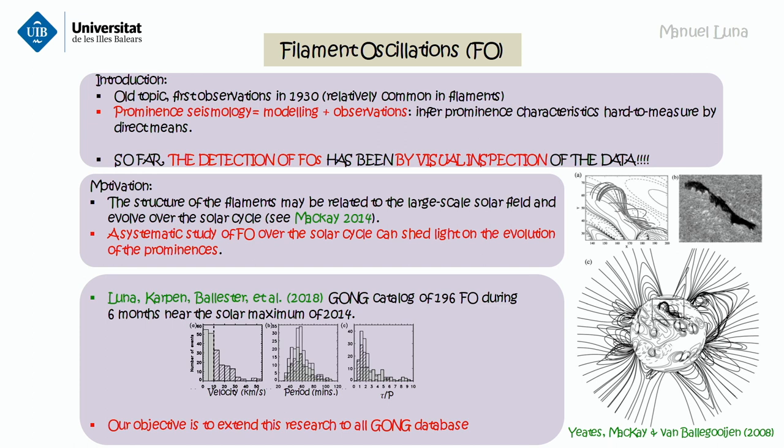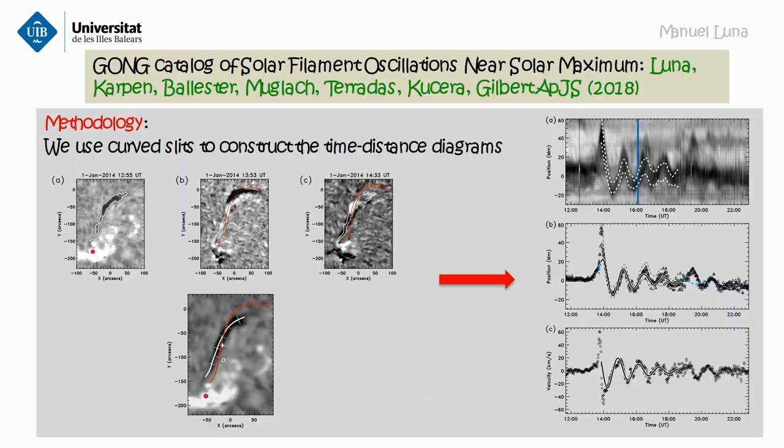The idea is to analyze all the datasets we have in GONG — that is more than 10 years of data with images every minute — and try to detect oscillations and also parameterize them. This is the result from the catalog, and this is how we did it in that catalog.